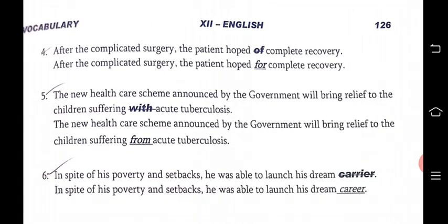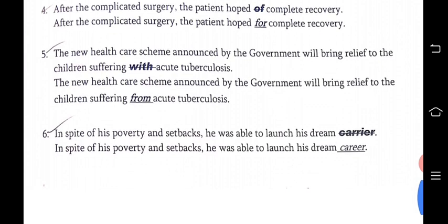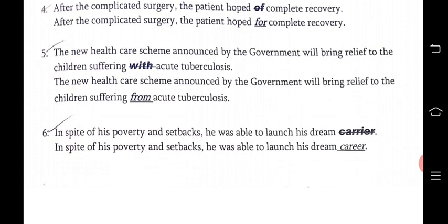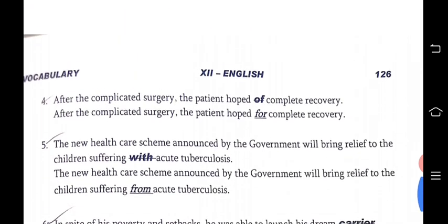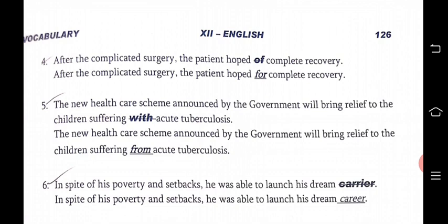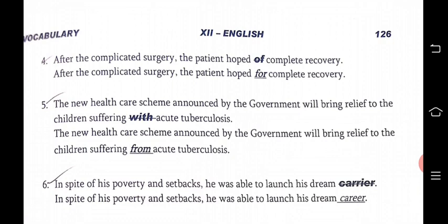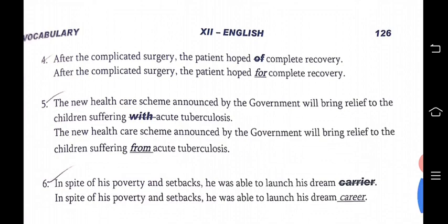In spite of his poverty and setbacks, he was able to pursue his dream career. Note: C-A-R-E-E-R is career (profession), while C-A-R-R-I-E-R means carrier (like a bicycle carrier or seat carrier). Hope you have enjoyed this vocabulary session. I will meet you in the next class with the third unit grammar part — that is active and passive voice, which is very very important. Presented by N. Ramesh Kumar, HOD, Department of English, Sri Vidya Bharatiya Metric Higher Secondary School, Sakram Bale, Namakkal. Thank you so much.